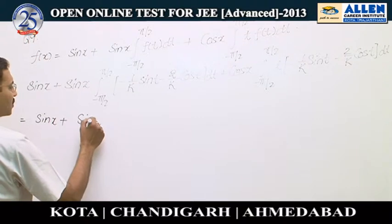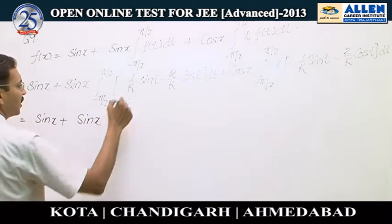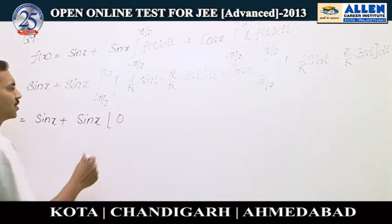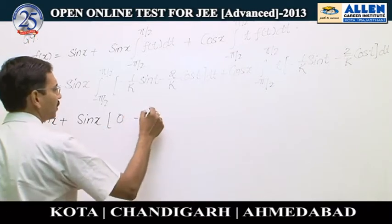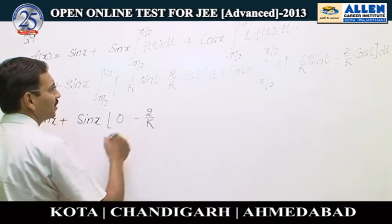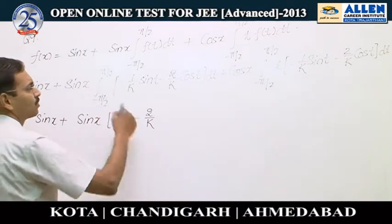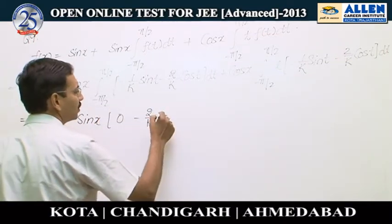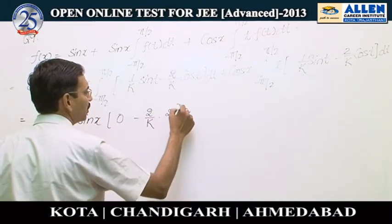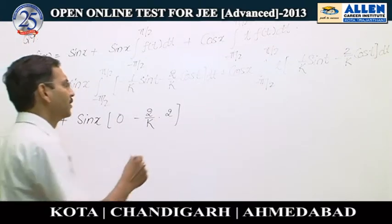So this integration will be 0. The first term is sin x times 0, so the first integration is 0. Then the next term is minus 2 upon k; taking the constant outside, we integrate cos t from -π/2 to π/2, and the value comes to be 2. That is a standard value.